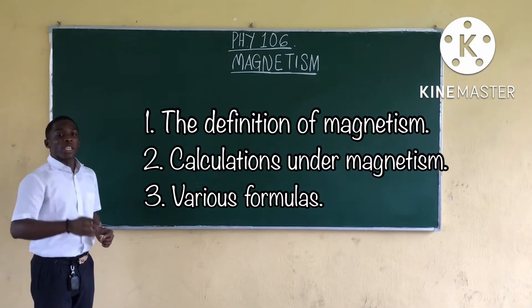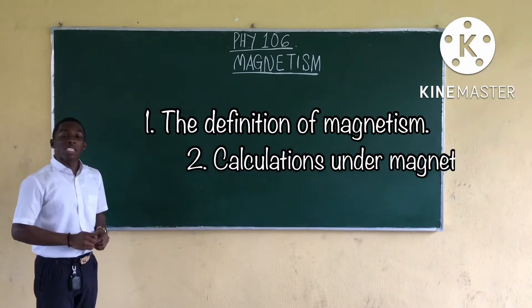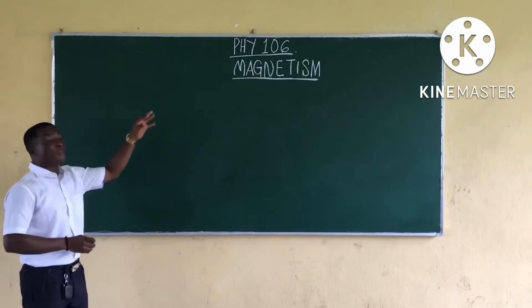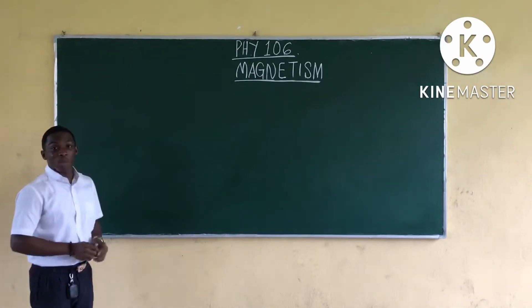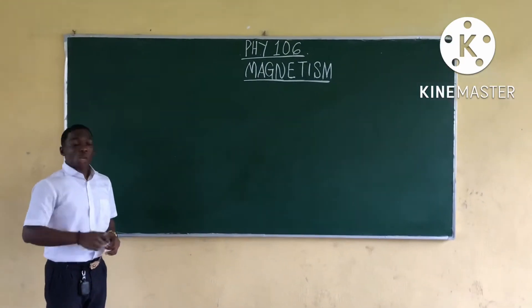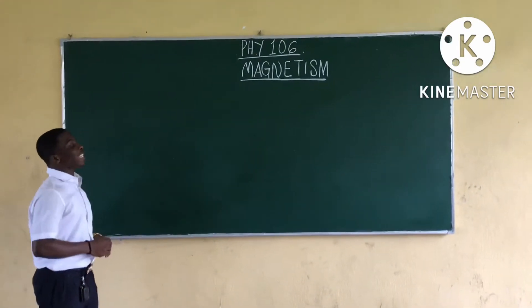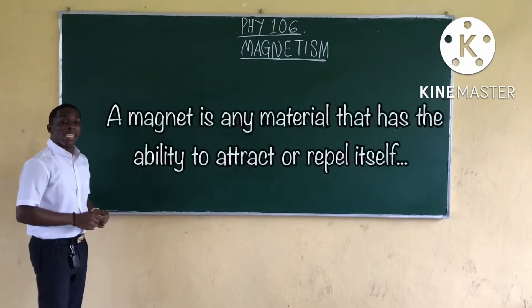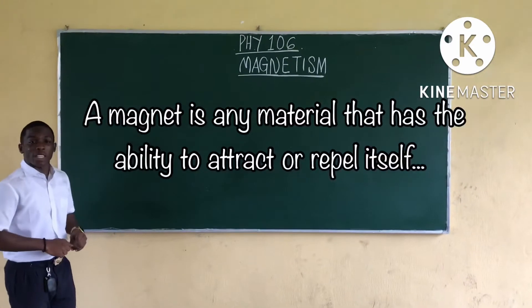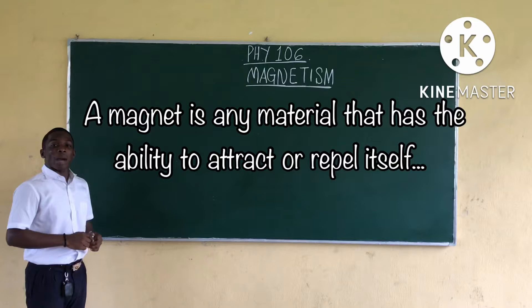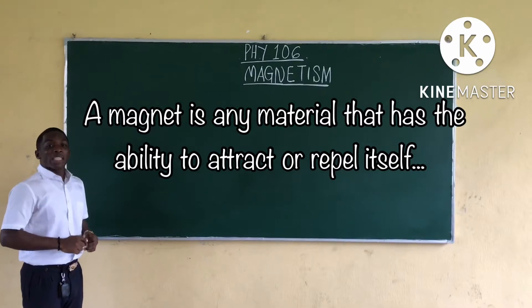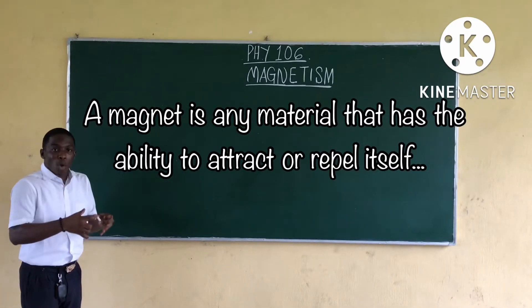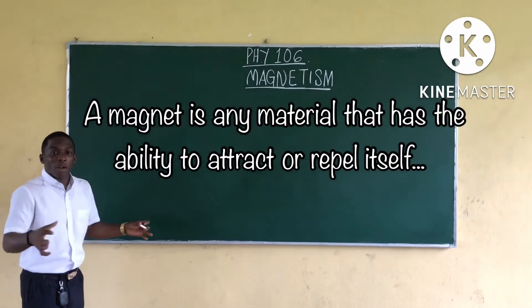But before we proceed, we need to know the definition of a magnet, because the word Magnetism was gotten from Magnet. So what is a Magnet? A Magnet is any material that has the ability to attract or repel itself.